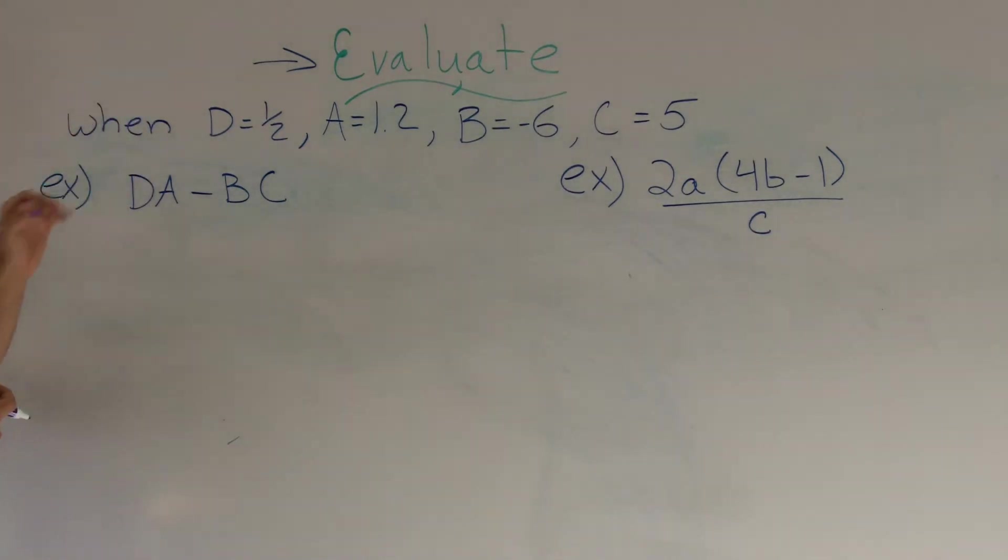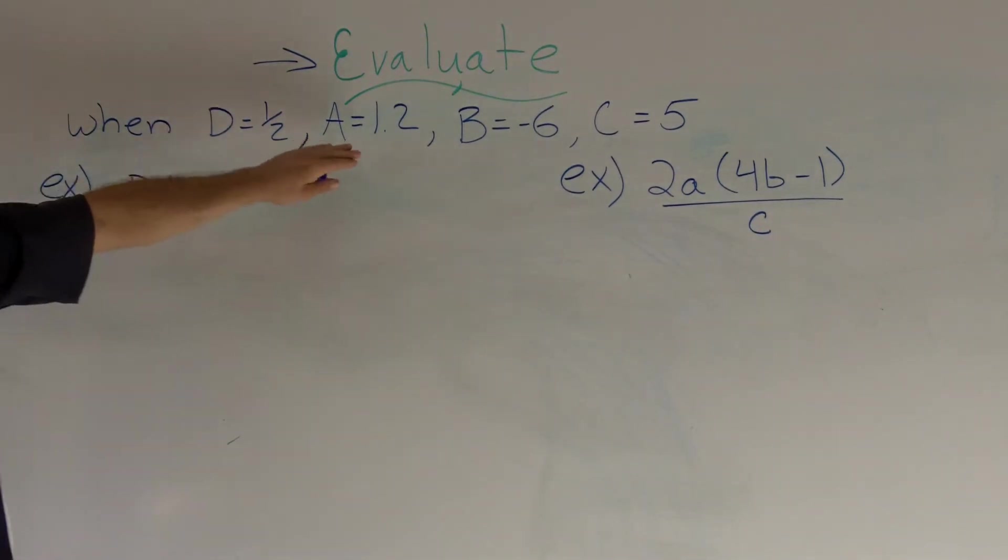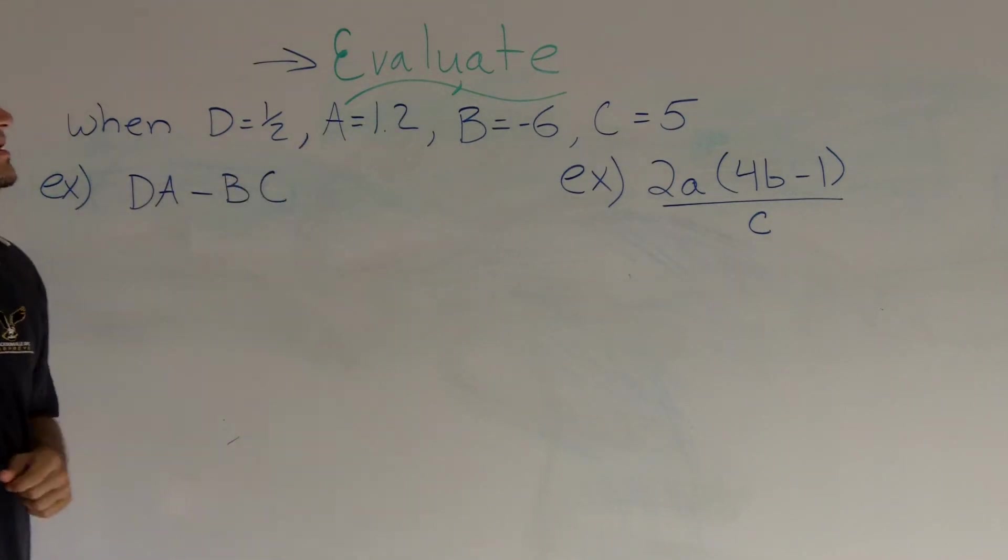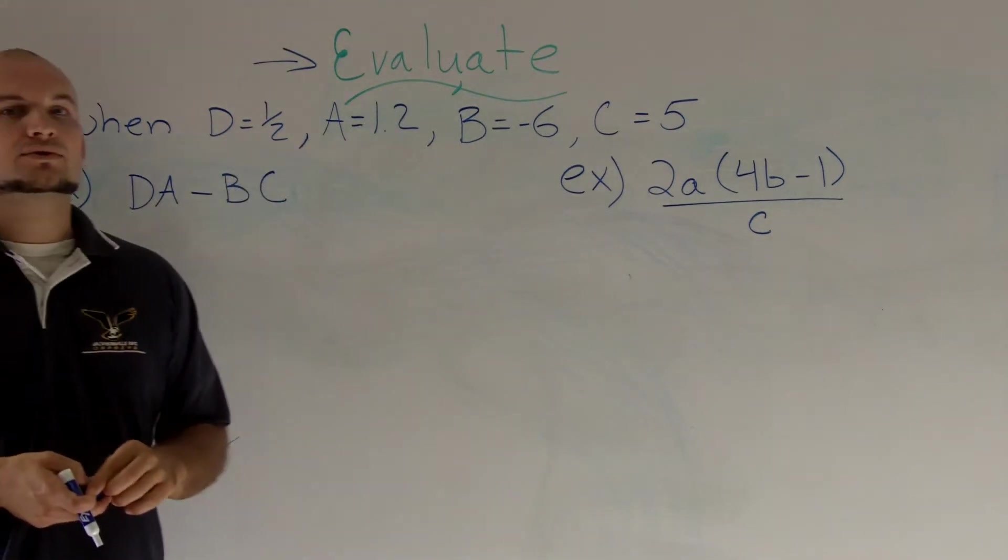Right now when I look at this first example, I see it has no values. It has a whole bunch of symbols. However, one of my constraints for the evaluate is evaluate when D equals 1/2, A equals 1.2, B equals negative 6, and C equals 5.